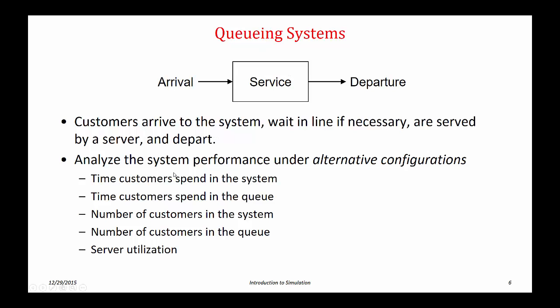In these types of systems, we're interested in several performance metrics. We're interested in the time customers spend in the system from arrival to departure, how long customers wait for service, the number of customers in the system, the number of customers in queue, and server utilization. As we combine queuing systems into queuing networks there will be additional performance metrics of interest, but these are the fundamental metrics we're almost always interested in.